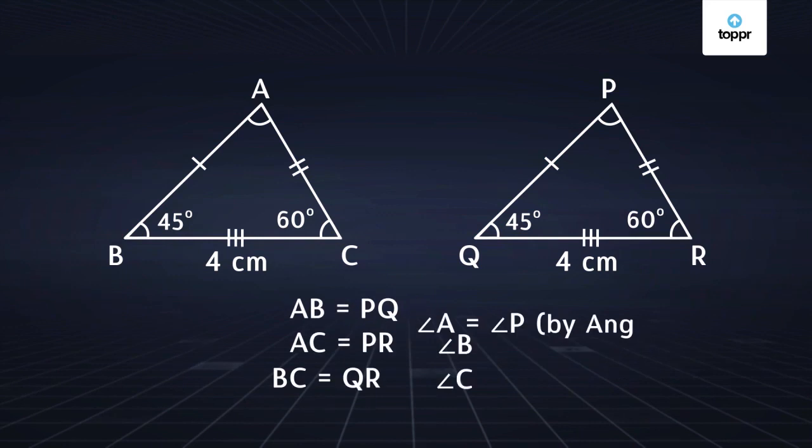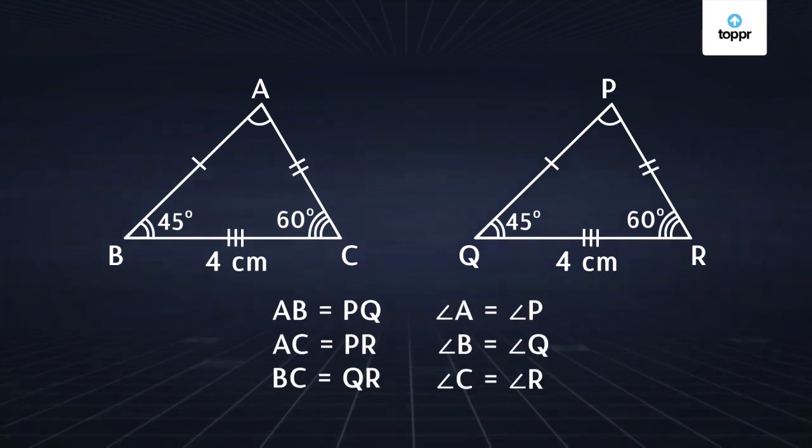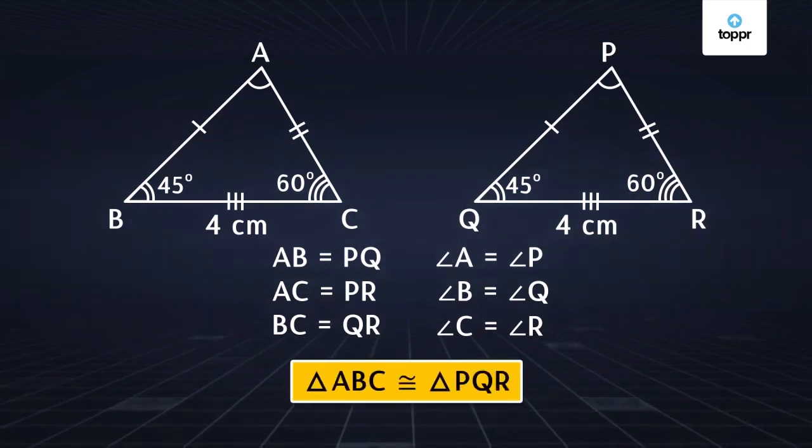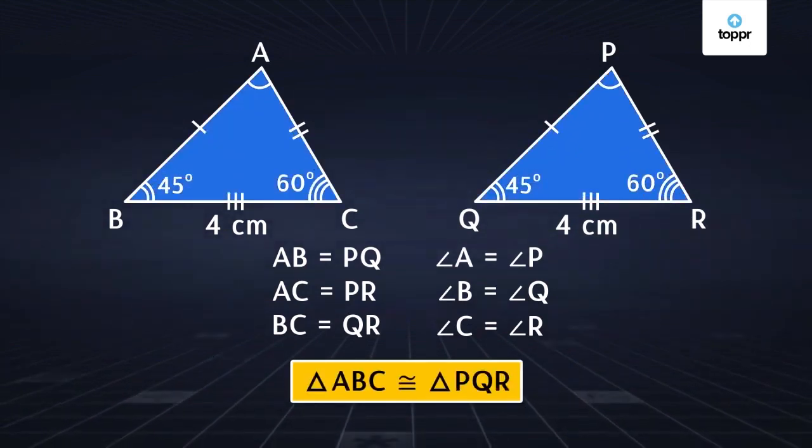As all three corresponding sides and corresponding angles are equal in the two triangles, we can say that they are congruent. So triangle ABC is congruent to triangle PQR. This will always be true no matter what length of the side and measure of angles we start with.